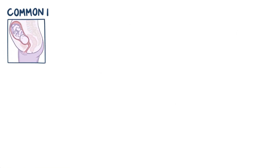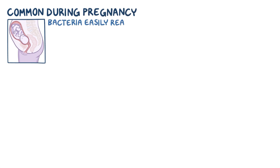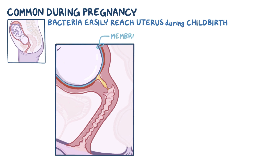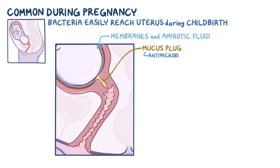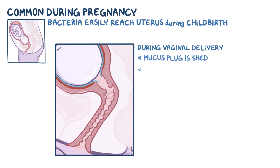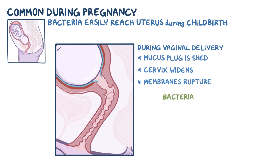Endometritis is a common problem during pregnancy, because bacteria can easily reach the uterus during childbirth. Normally the fetus is surrounded by membranes and amniotic fluid, and the uterus' opening is sealed by a mucus plug. This mucus plug has antimicrobial properties, preventing bacteria from reaching the uterus. Typically, during vaginal delivery, the mucus plug is shed, the cervix widens, and the membranes around the fetus rupture so the baby can be delivered. However, bacteria in the lower genital tract can take advantage of this and sneak through the opening up to the uterus, causing endometritis.